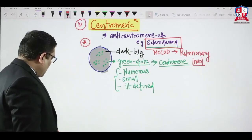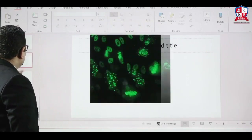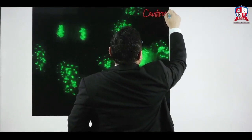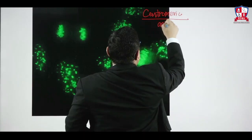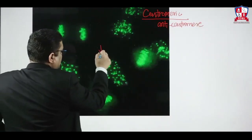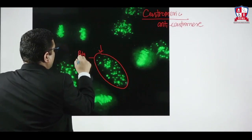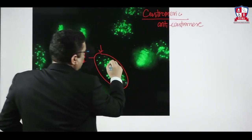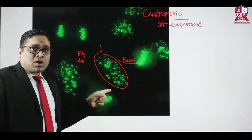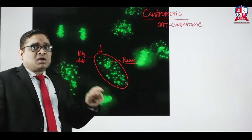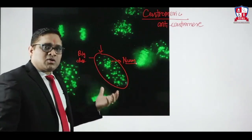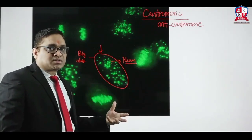On immunofluorescence microscopy, in centromeric pattern you see dark background with numerous irregular ill-defined green spots corresponding to centromeres — this is commonly seen in scleroderma. That is how we identify centromeric pattern.